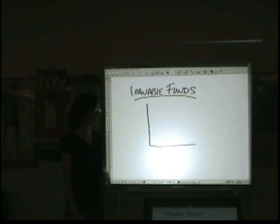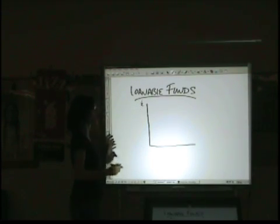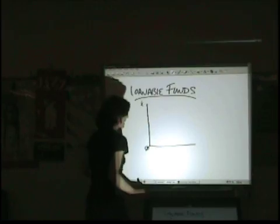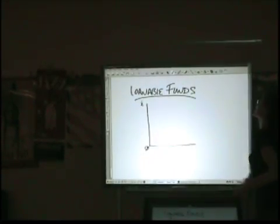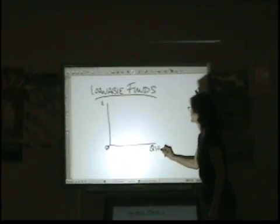So, for this graph, we're going to keep the interest rate up here. And again, you can use an i or a lowercase r. Either one is fine. Just try to be consistent. And on the bottom, instead of quantity of dollars, we're going to say quantity of loanable funds.